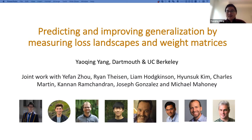Hello everyone, my name is Yaoqin Yang and I'm a new assistant professor at Dartmouth — I've basically just joined, and I used to be a postdoc at UC Berkeley. Today's topic is on the generalization of machine learning models, especially deep neural networks. We'll mainly talk about some ideas and tools that originate from statistical physics and random matrix theory and show how they can be applied to deep learning. This is joint work with many colleagues.